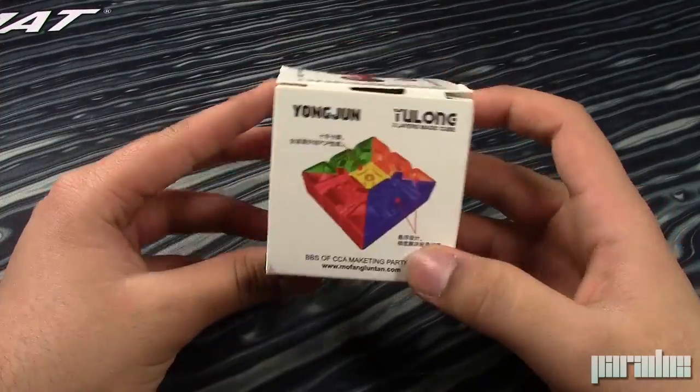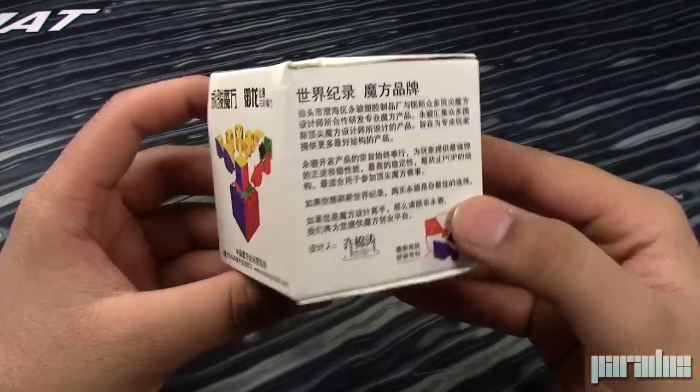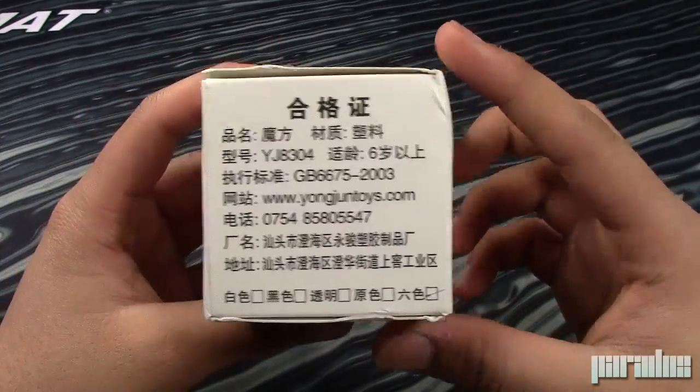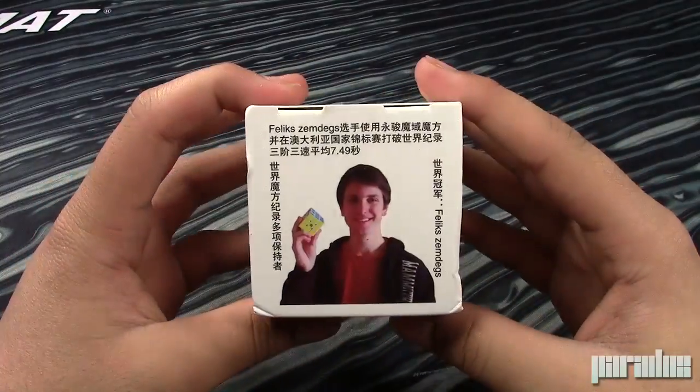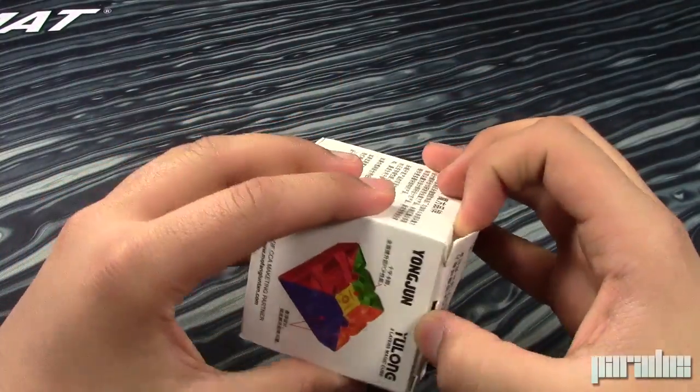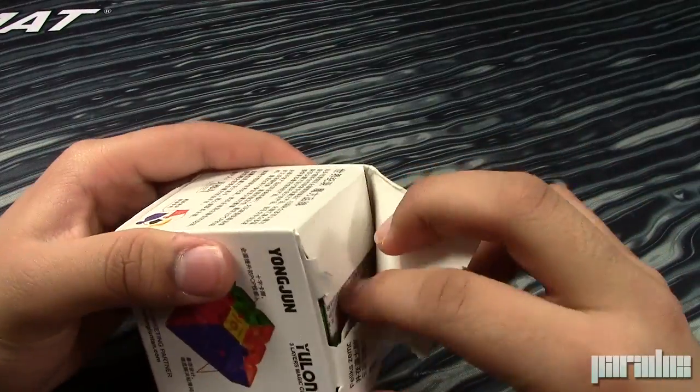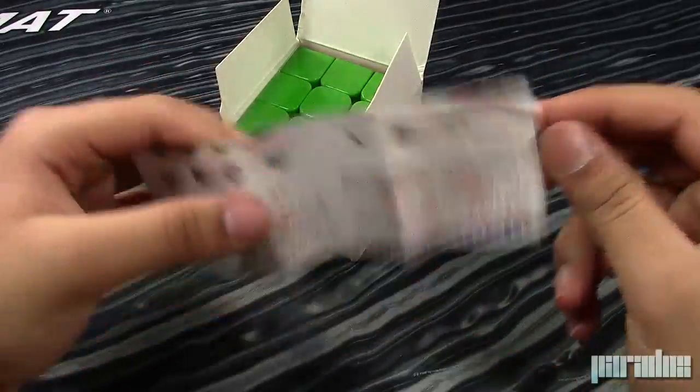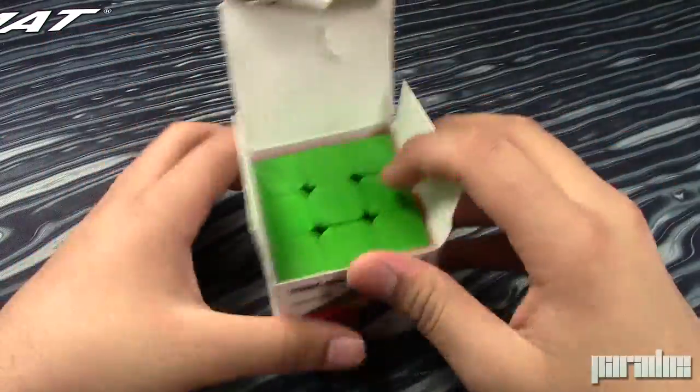So I switched back to my regular angle, and we can take a quick look at the box. It says Yongjun Yu Long right there. Just some writing, Felix Zemdegs. Now let's open this up. It comes with one of these little pamphlet things with a bunch of random stuff on it.